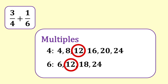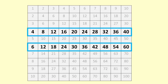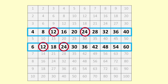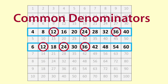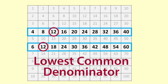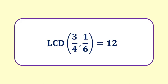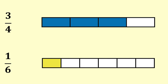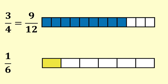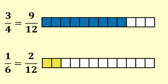Both four and six go evenly into twelve. You can see these multiples on the multiplication table — the multiples of four and the multiples of six. Twelve, twenty-four and thirty-six all appear on both lines, so all are common denominators, but twelve is the lowest common denominator because it is the smallest. We can write that as LCD of three fourths and one sixth equals twelve. Three fourths is equivalent to nine twelfths, and one sixth is equivalent to two twelfths. Once the two fractions have been converted to twelfths they are ready to add.